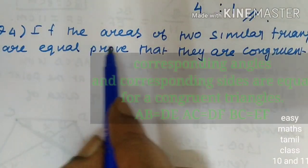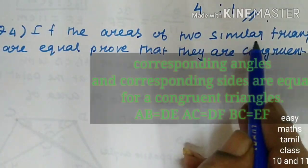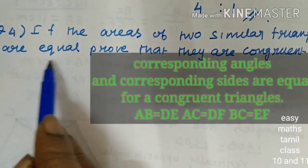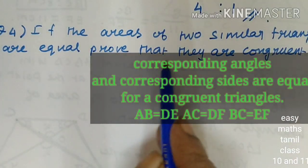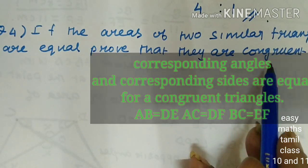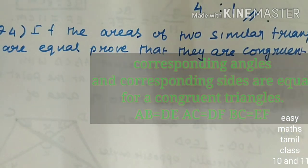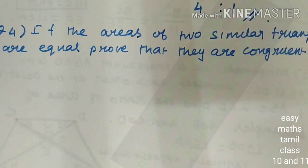If the areas of two similar triangles are equal, prove that they are congruent. Take two triangles ABC and DEF.